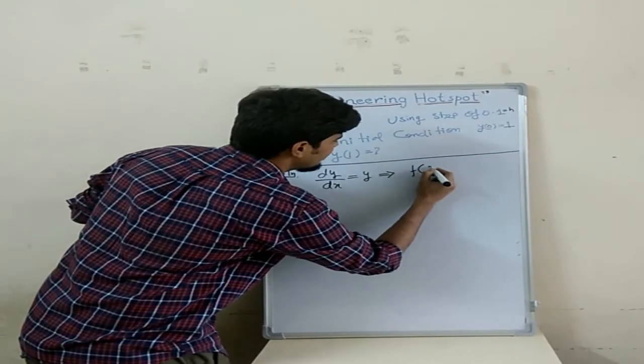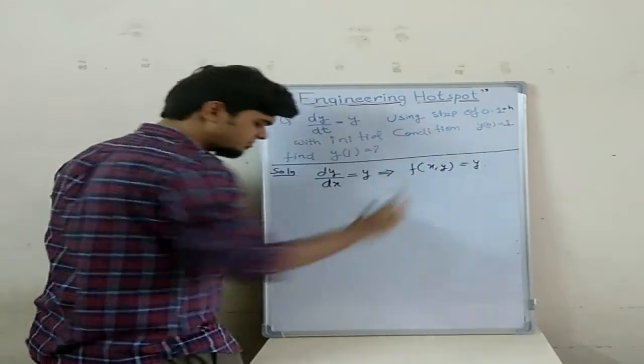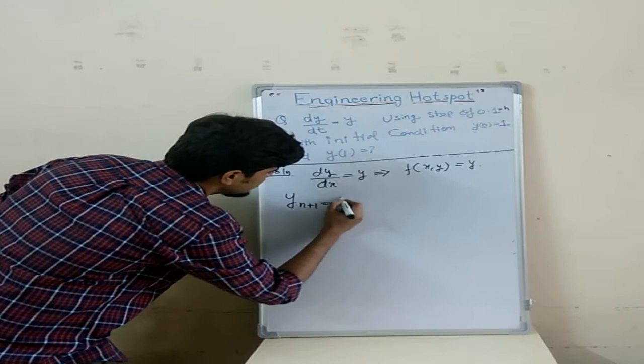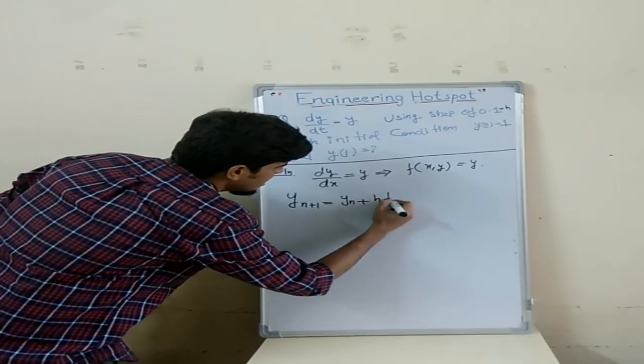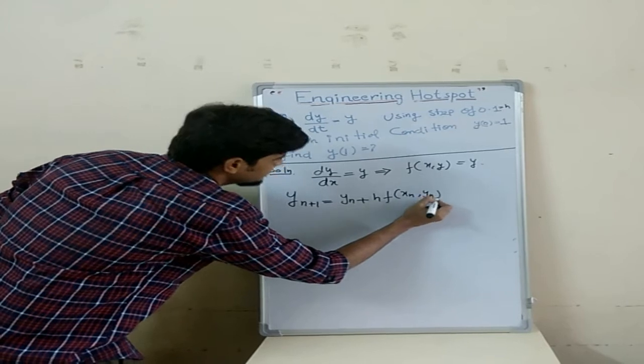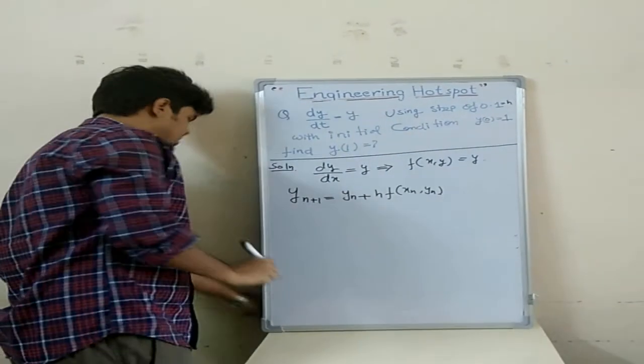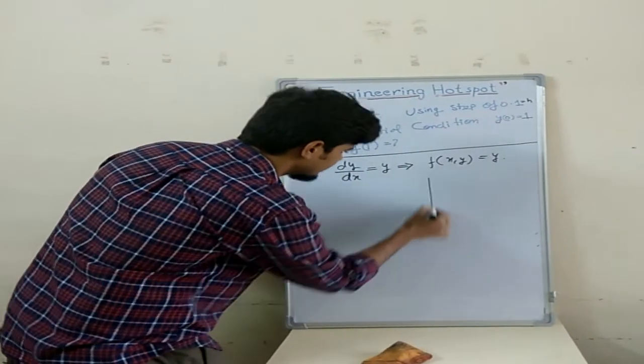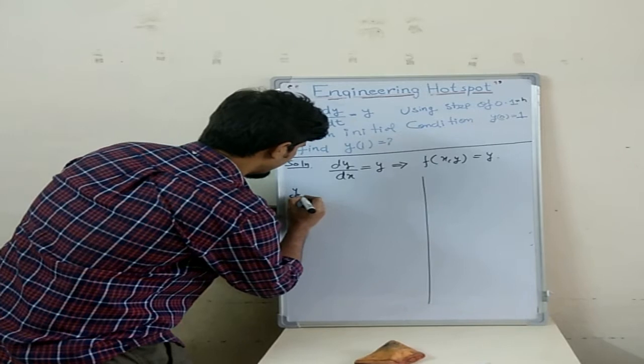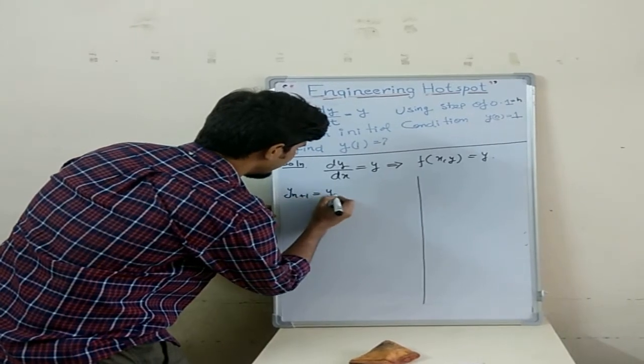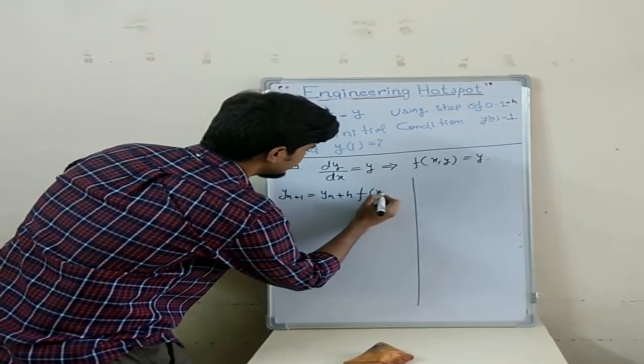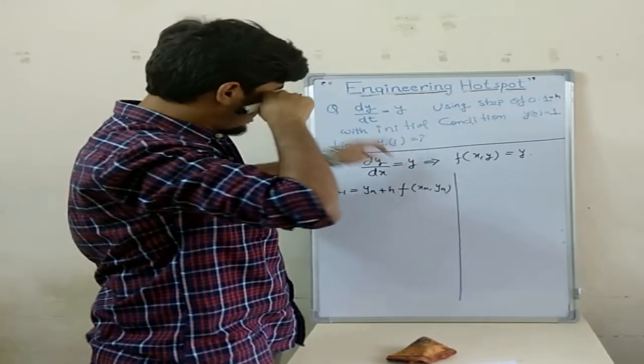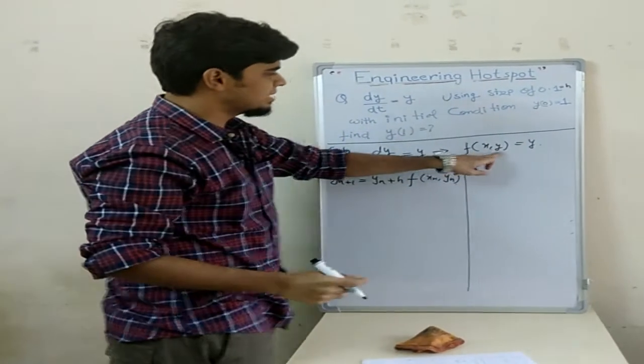f(x,y) equals to y I can take. And we know that formula of Euler is y(n+1) equals to y(n) plus h times f(x(n), y(n)). Simple. So here you can write y(n+1) equals to y(n) plus h times f(x(n), y(n)). This is the formula and this is the function, put x(n), y(n) here.